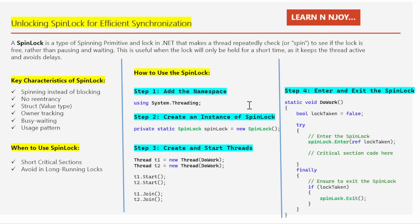The System.Threading namespace contains classes and methods for working with threads and thread synchronization. By importing this we get access to the spin lock class and other multi-threading utilities. Step number two: create an instance of the spin lock, marked as static — written as: private static SpinLock spinLock = new SpinLock().